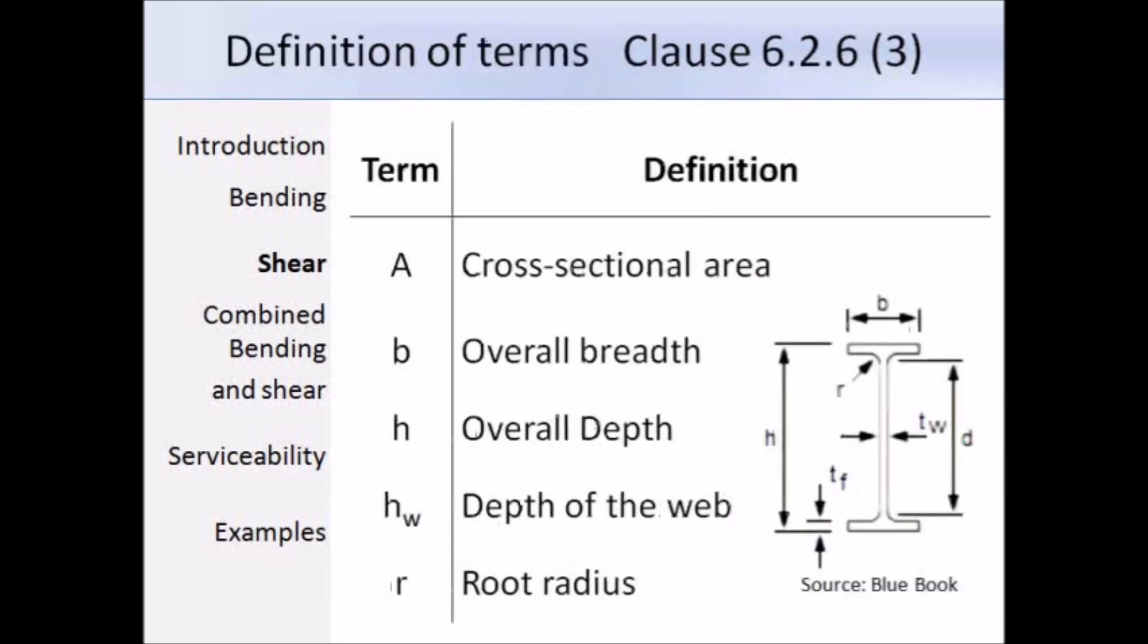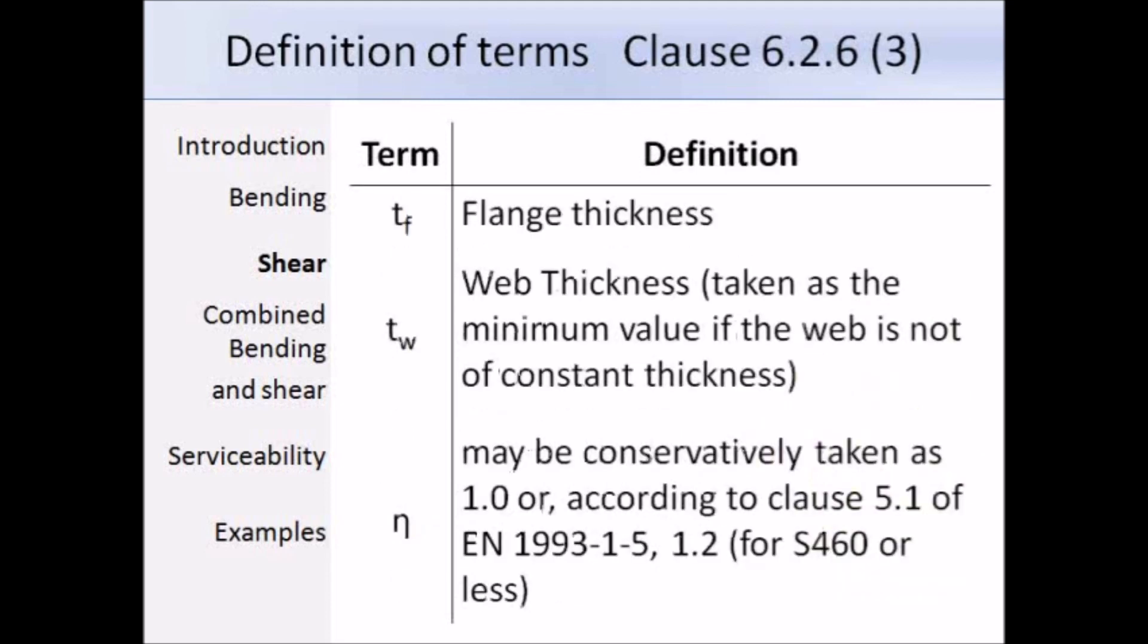So, A is the cross-sectional area, B is the overall breadth, and that would have been capital B in BS5950. H is the overall depth, which you might have used D in BS5950. H_w is the depth of the web, equivalent to the overall depth minus 2 times the flange thickness, and R is the root radius. T_f is the flange thickness, so you might have been used to capital T. T_w is the web thickness, and that would have been small t in BS5950. And then this value eta can be conservatively taken as 1.0. So overall, there's nothing too difficult there.